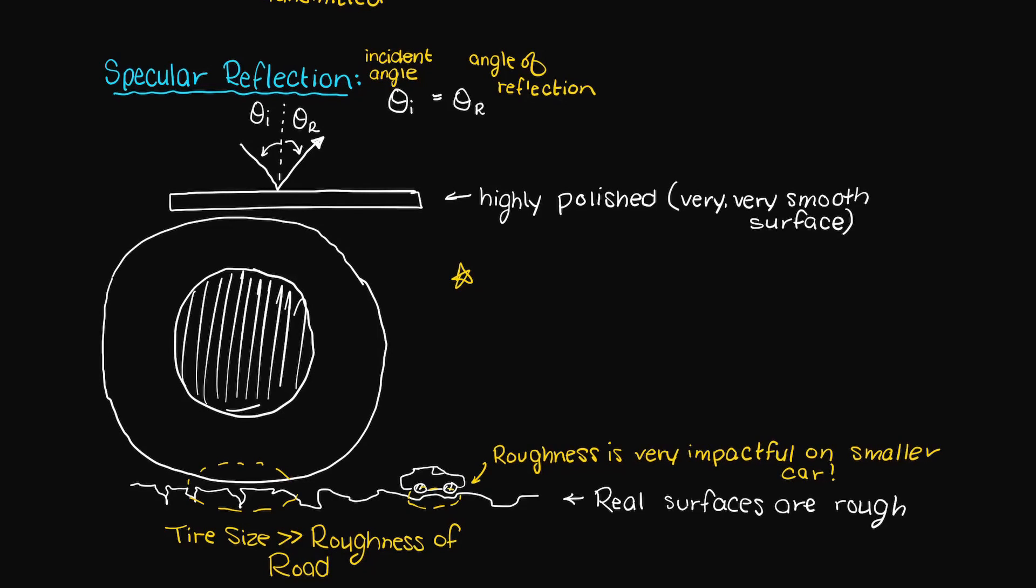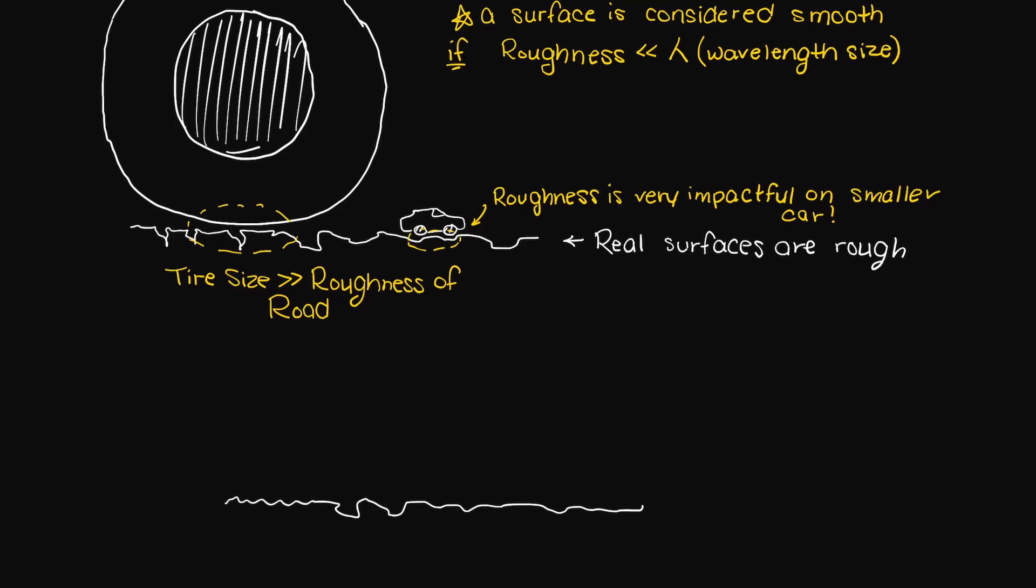Therefore we typically deem a surface smooth if the height of the surface roughness is much less than the wavelength of the incoming radiant energy. And you can hopefully see why this is the case here in this little drawing.